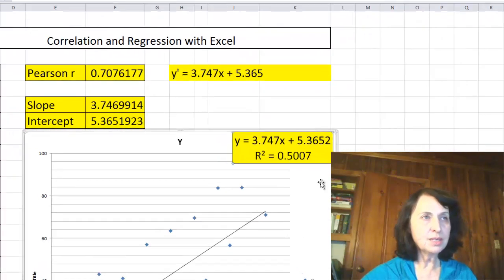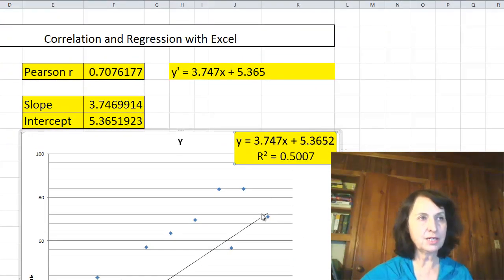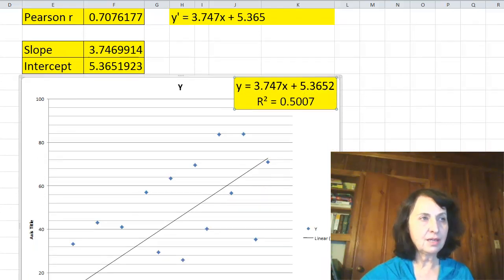So you can see that the formula that they have for regression, this formula that is the best fit in this case, is the same as the formula that we calculated mathematically with slope and intercept.